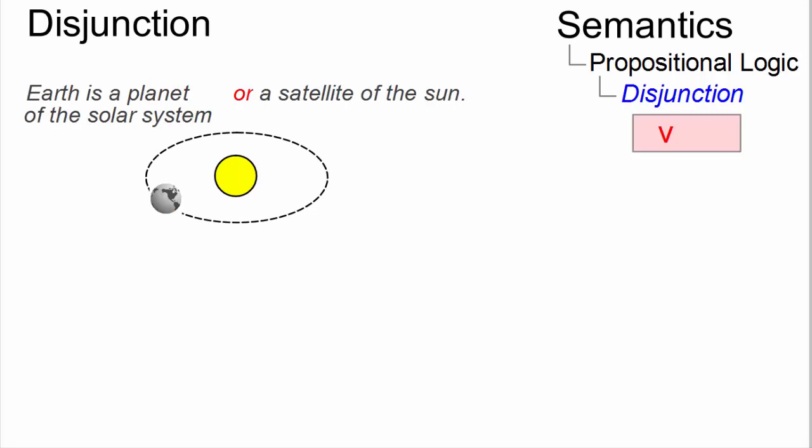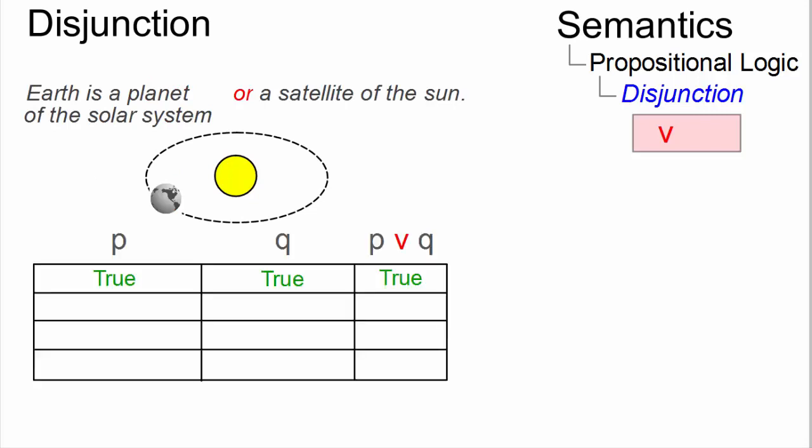Earth is a planet of the solar system or a satellite of the Sun. If both disjuncts are true, as in our case, the disjunction is true too.